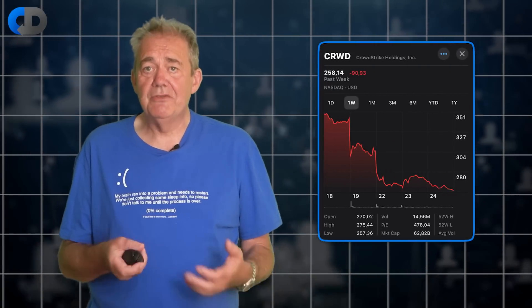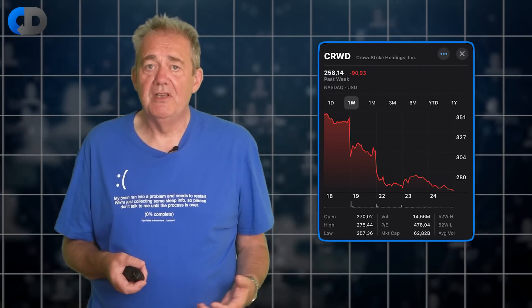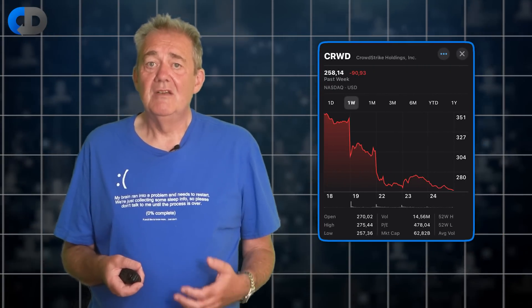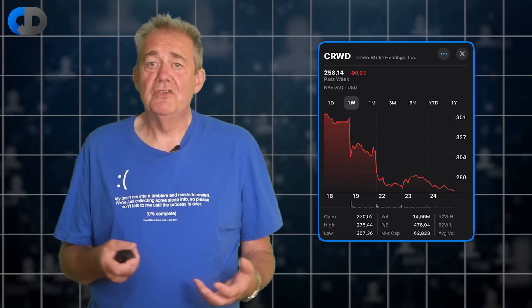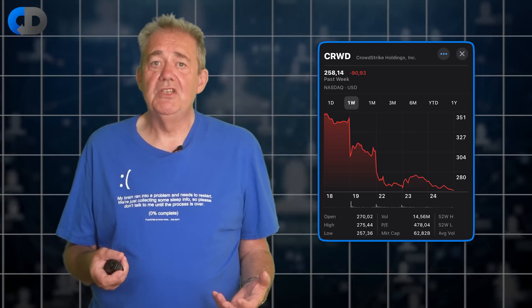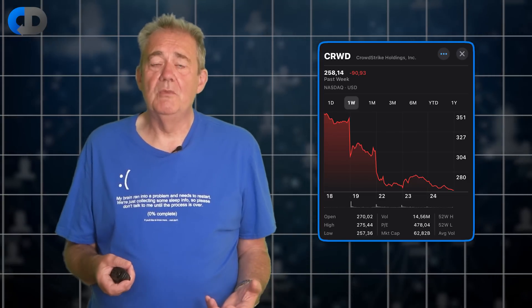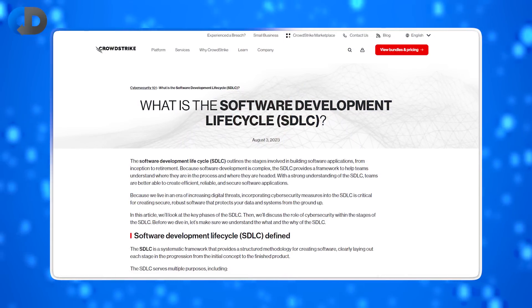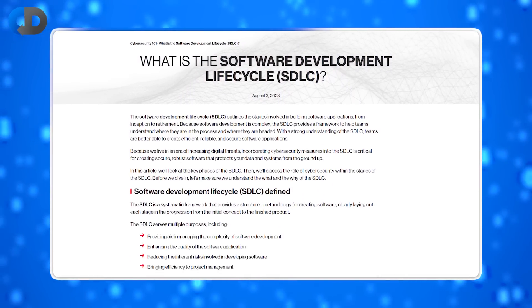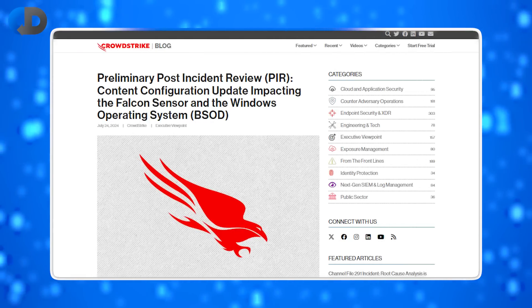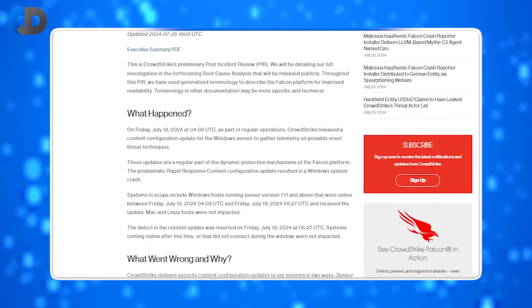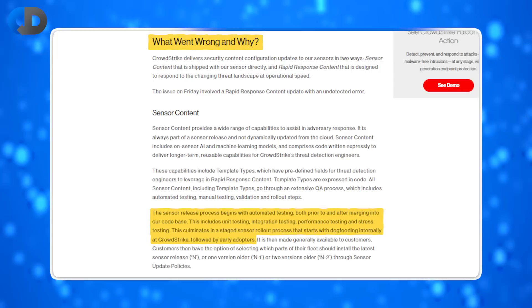And a 30% drop in CrowdStrike's share price is at least deserved and probably in reality an insufficient punishment for such a dereliction of duty, given the global nature of the disruption caused. In a post on CrowdStrike's website, they have a description of the software development lifecycle that they recommend to their clients, and in their post-incident report, a description of their own development process.